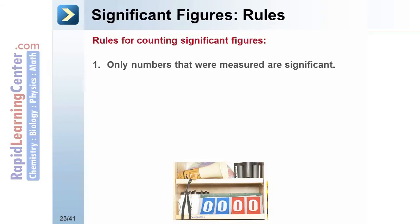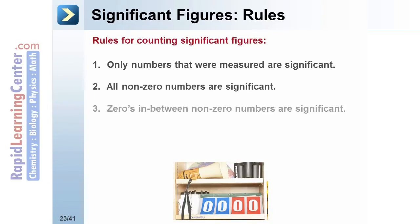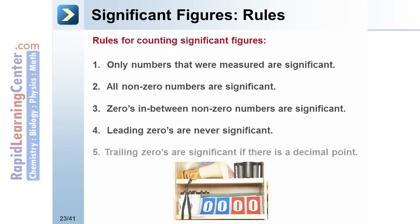Only numbers that were measured are significant. All non-zero numbers are significant. Zeros in between non-zero numbers are significant. Leading zeros are never significant. Trailing zeros are significant if there is a decimal point.